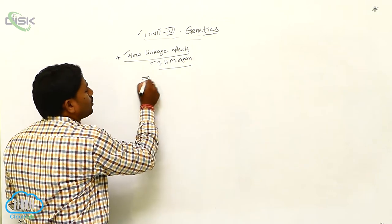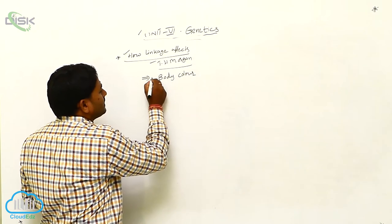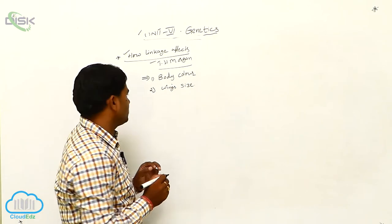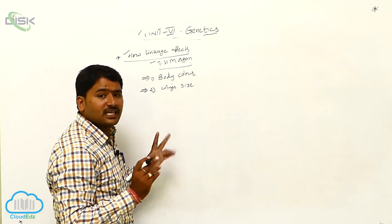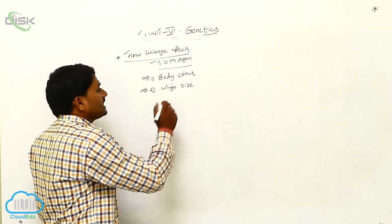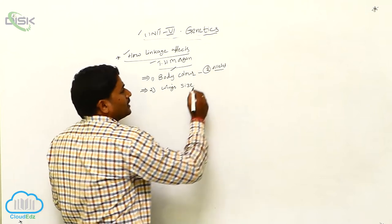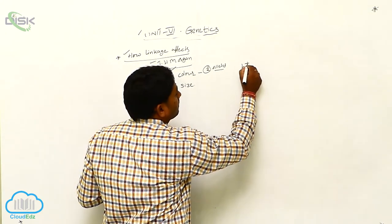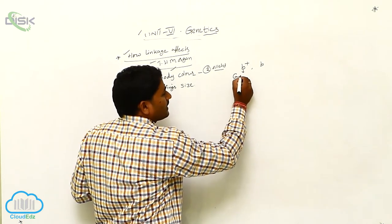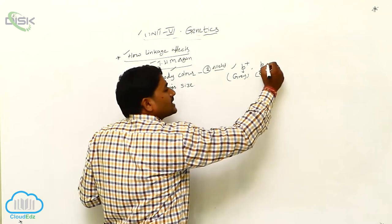Morgan wanted to study two characters of Drosophila: one is body color and the second is wing size. He studied whether these two characters are genetically linked or not. For body color, there are two alleles: B+ and B. The body color is either gray (B+, dominant) or black (B, recessive).